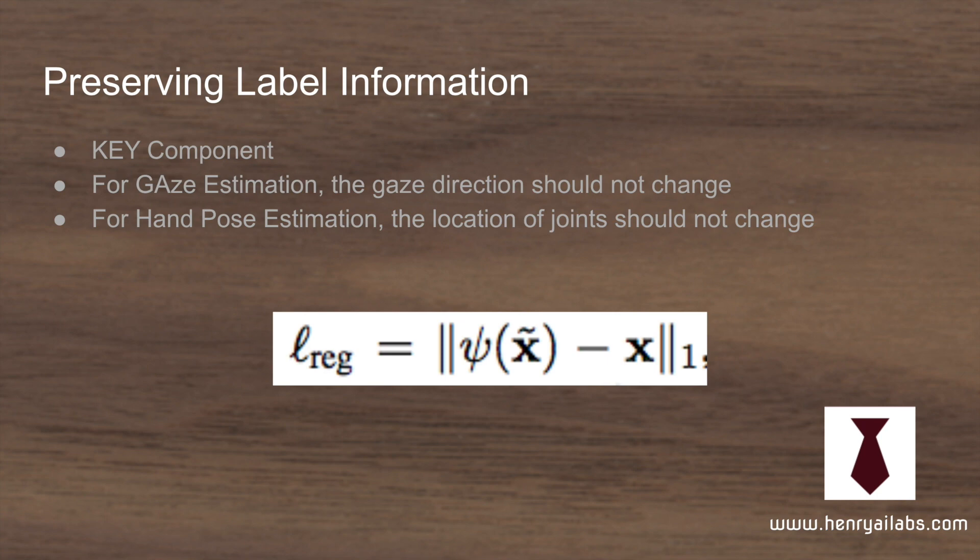Breaking down the regularization loss: they take the L1 distance between the generated changed image and the original input synthetic image. The key idea is just that they don't want to change the label of the simulated images.